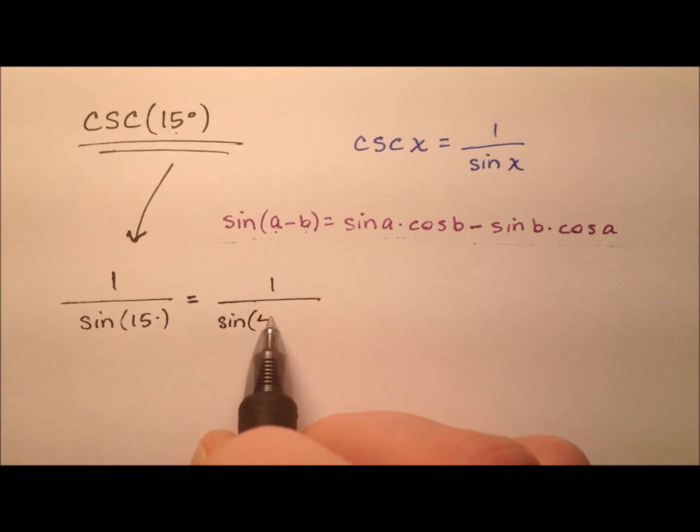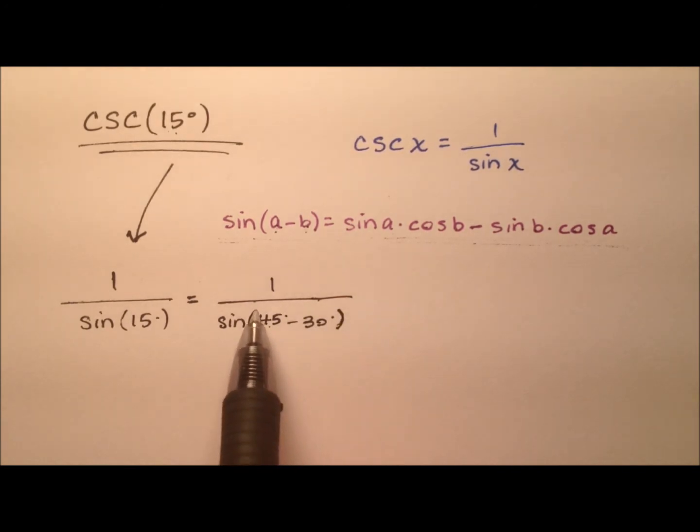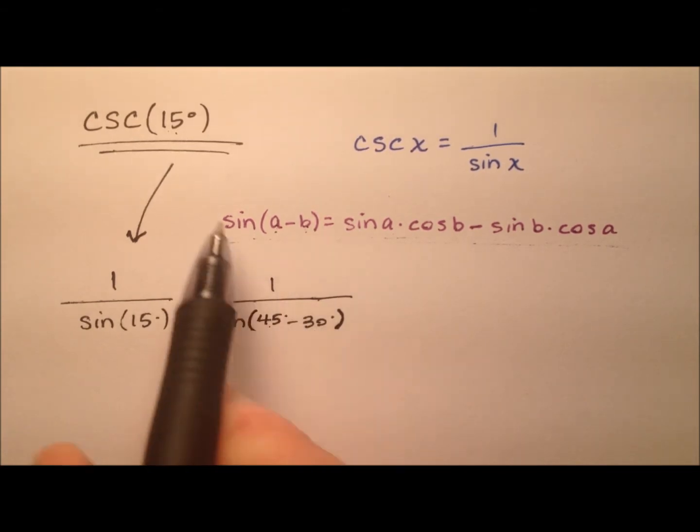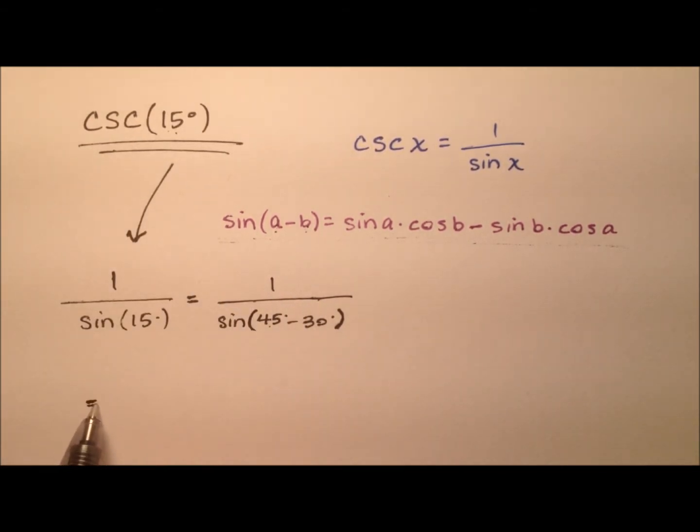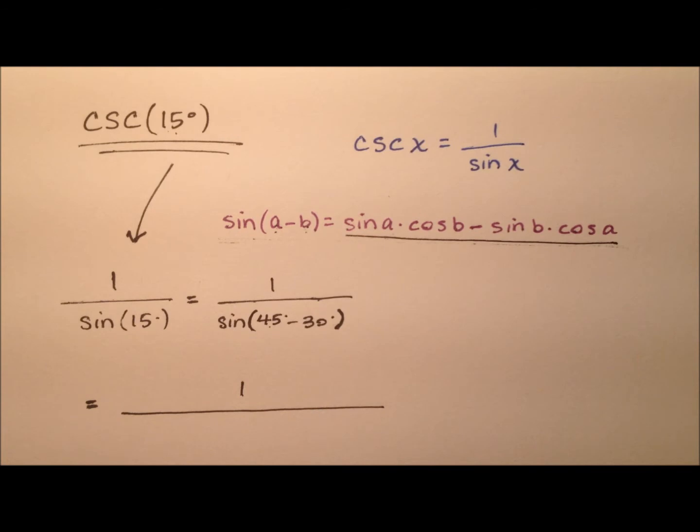We could use 45 degrees minus 30 degrees, because 45 degrees and 30 degrees are both angles for which we're very familiar with sine and cosine. And also, they subtract to make 15 degrees. So, fabulous. Let's go ahead and use this expansion for the difference formula for sine.